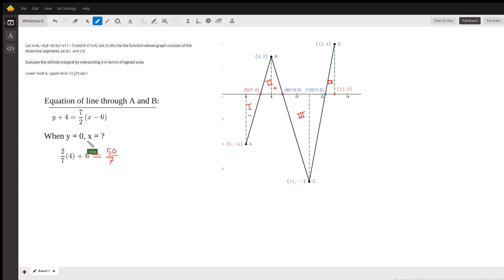So when y equals 0, I multiplied both sides by 2/7 and added 6. And I found out that x is 57/7. And, of course, the y coordinate is 0. So that's the coordinate of this point right here.